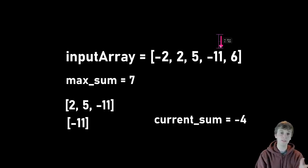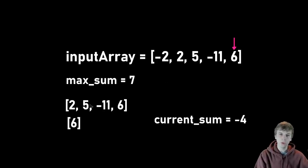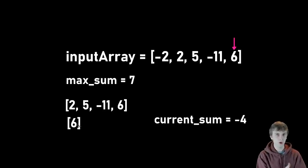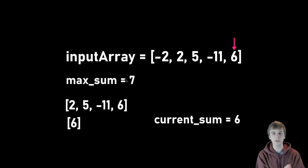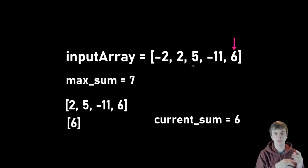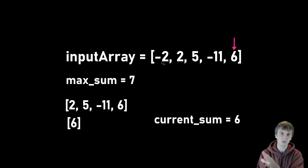Let's move on to the last element, six. Do we want to add six onto our current subarray or start over? The sum of extending is two, the sum of starting over is six. Six is greater than two, so we start a new sum — current sum is six. Is six greater than our max sum? No — max sum was seven the whole time from when we saw two and five. Max sum hit seven and hasn't been updated since. We're done with the loop. Whatever we have now is our maximum sum — the max contiguous subarray sum — and that's what we return.